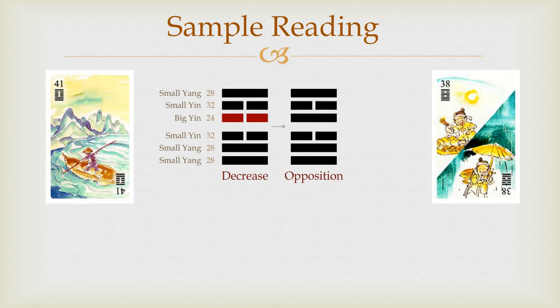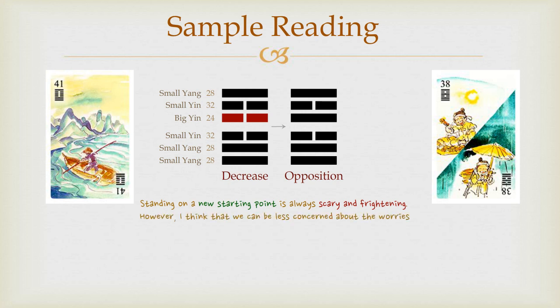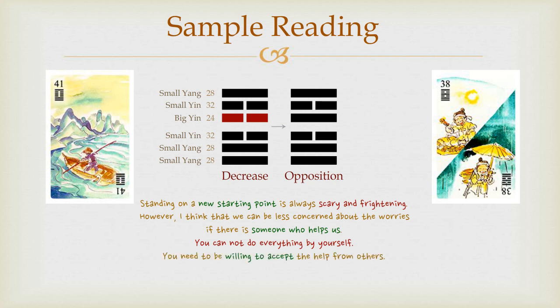The meaning of each hexagram or line is going to be explained later in this series. If you look up the meaning of the fourth line of Decrease, you will find the following description: Standing on a new starting point is always a scary and anxious experience. However, we can be less concerned about the worries if there is someone who helps us, such as the power of yang from the first line. You cannot do everything by yourself. Sometimes you need to be willing to accept the help other people kindly offer to you. Of course, not all help is up for grabs — you may sometimes have to move quickly so that you do not miss such an opportunity.